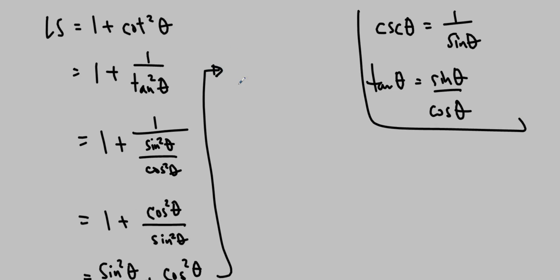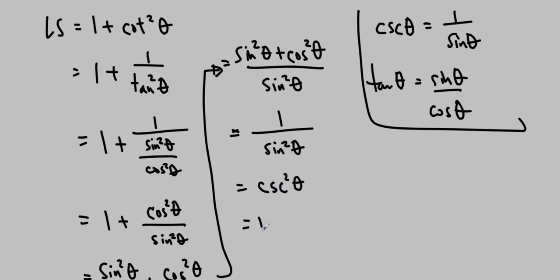Now I have sin squared theta plus cos squared theta over sin squared theta. From the previous question, I know that sin squared theta plus cos squared theta is equal to 1. So this is 1 over sin squared theta. And 1 over sin squared theta is actually equal to cosec squared theta, which is my right side. So the left side is equal to the right side. Usually we end off with something like this, a little squiggle, or you can do a box. Some people write QED. It's up to you. But it's just a little victory dance at the end of our proof to show that we have done it.